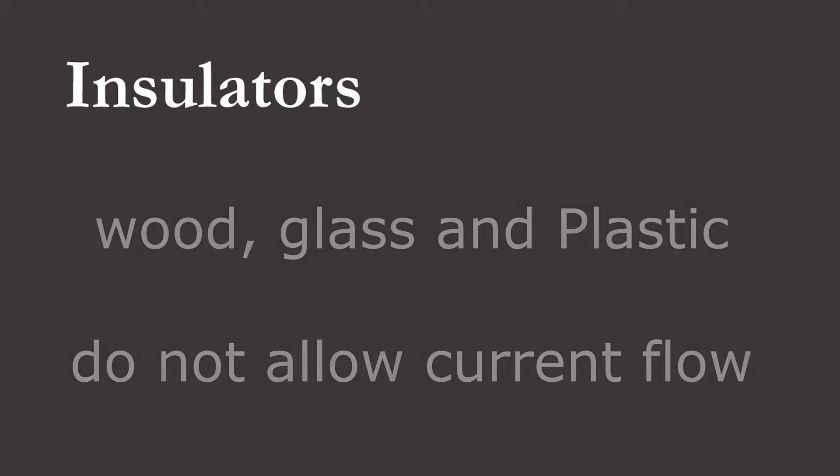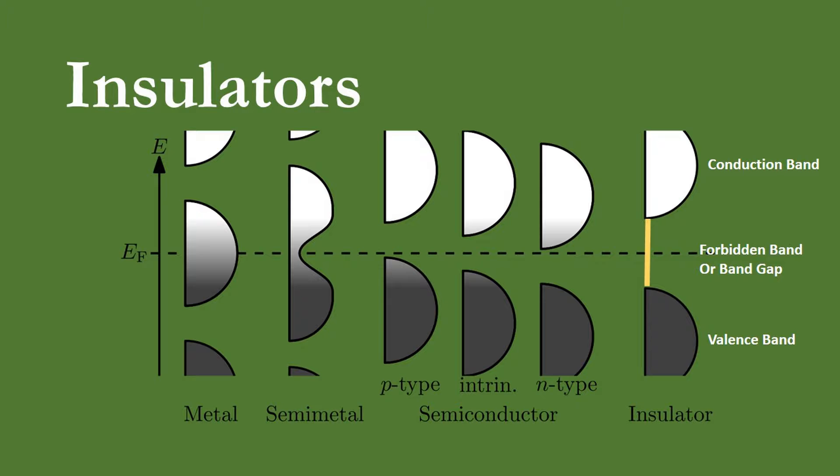Substances like wood, glass, and plastic which do not allow the passage of current through them are known as insulators. The valence band of these substances is full while the conduction band is completely empty. The forbidden band or energy gap between valence band and conduction band is very large, about 8 electron volts.